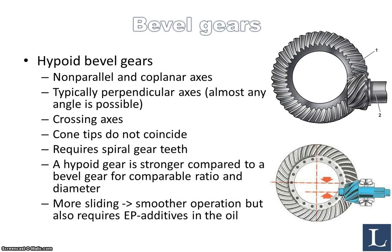The hypoid gear is stronger compared to a bevel gear for comparable ratio and diameter. However, there is a downside: this geometry results in more sliding between the gear teeth, which gives you smoother operation, but it also requires more EP additives in your lubricant to prevent excessive wear, seizure, or other types of damage induced by the frictional heating resulting from the sliding between the gears.